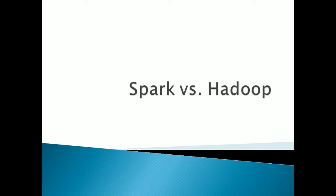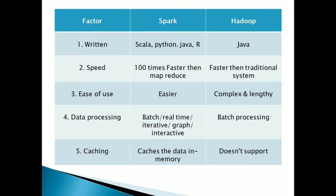Spark is written mainly in Scala language and it supports different language APIs such as Scala, Python, Java, and R. But Hadoop mainly supports Java — whenever we are writing code for Hadoop, we have to write in Java language; it doesn't support any other language. This is the main basic difference between Spark and Hadoop.